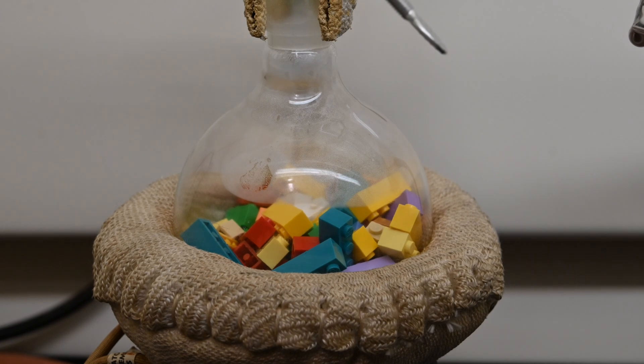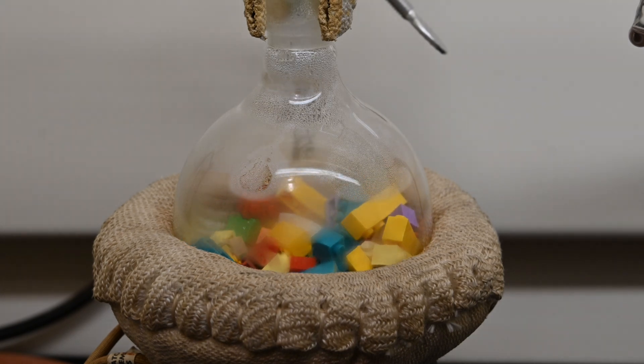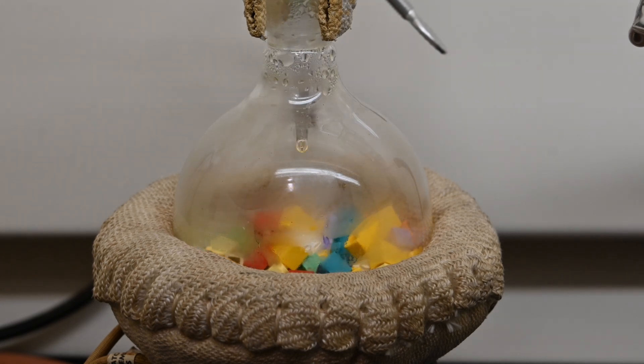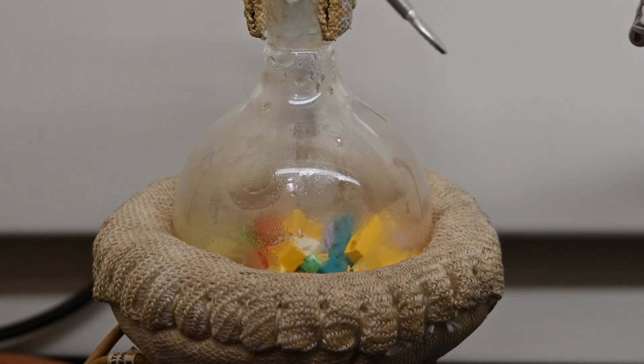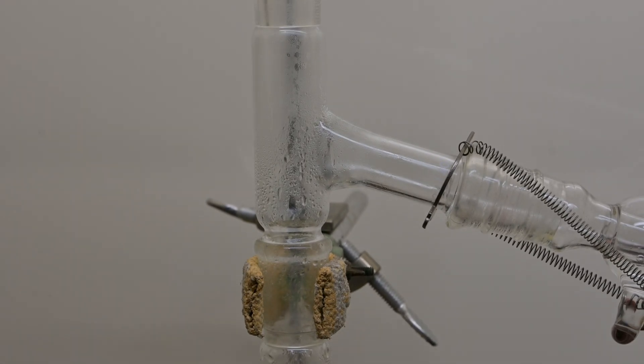When the temperature reached around 250 degrees celsius, the ABS plastic began to melt, and at around 500 degrees celsius, the plastic began to break down. As breakdown occurred, liquids started to boil off and climb up the flask, eventually reaching the condenser and running down into the collection flask.